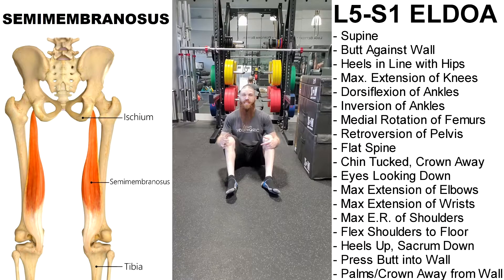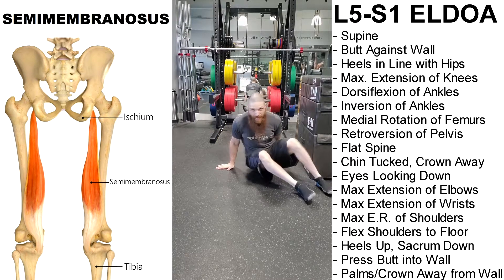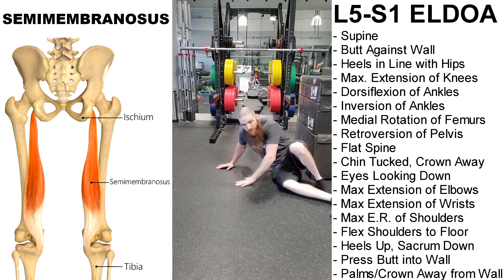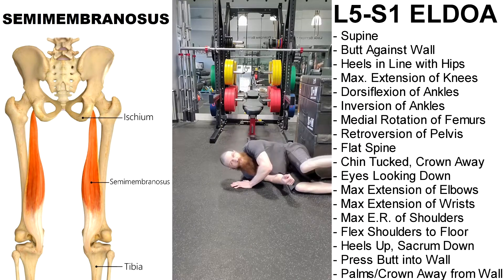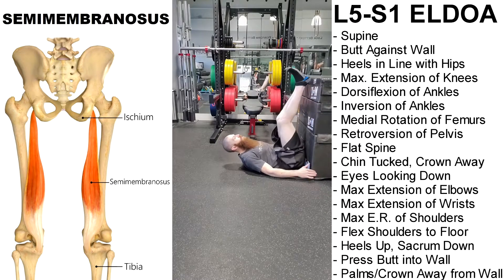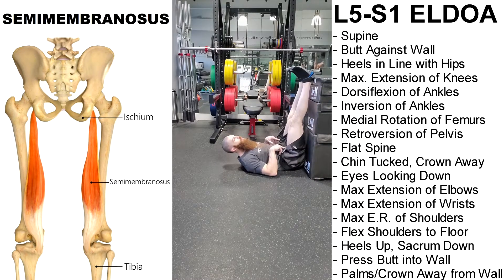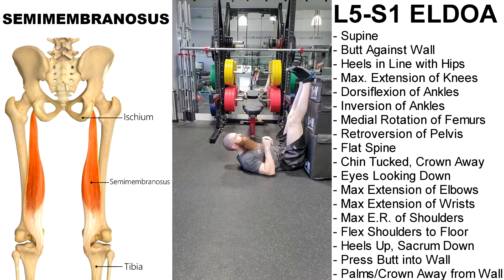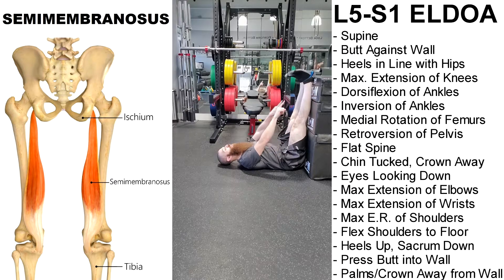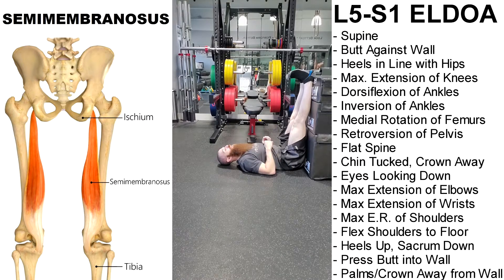Now we're going to take you through an ELDOA exercise for the semimembranosus muscle — it's going to be the L5-S1 ELDOA. Get into a supine position, lying down on your back, and get your butt as close to the wall as possible. You want your heels in line with the ischial tuberosities — if you don't know where that is, roughly the width of one fist apart. Then go into maximum extension of the knee, dorsiflexion of the ankle, inversion of the ankle, and medial rotation of the femurs, with just enough of a gap that your toes are not touching.